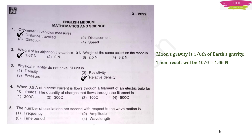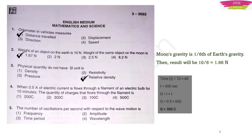Next question: when 0.5 ampere of electric current flows through a filament of an electric bulb for 10 minutes, the quantity of charge that flows through the filament is — charge equals current multiplied by time. Current is 0.5 A and time is 10 minutes, which converts to 600 seconds. So the quantity of charge is 300 coulombs. Option 2 is the right answer.